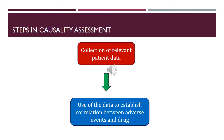In the first step, the data collected includes complete demographic details of the patient, details of the drug, medical history of the patient, the time of occurrence of adverse event, and so on. In the second step, a correlation is established between adverse event and drug. Let us understand this in the next slide.